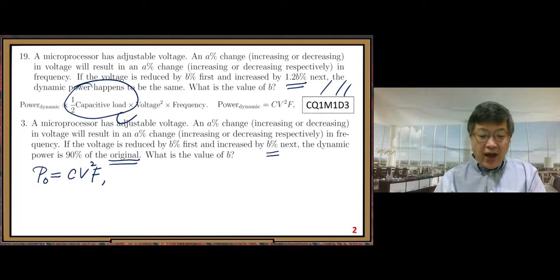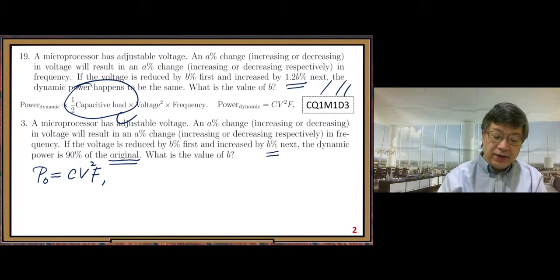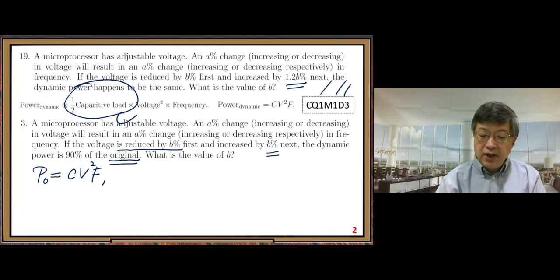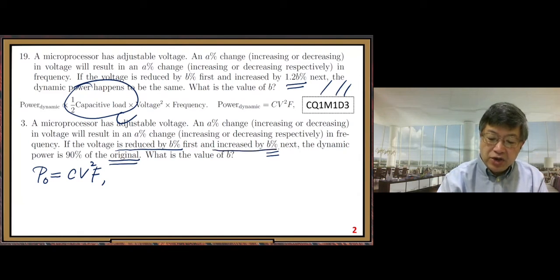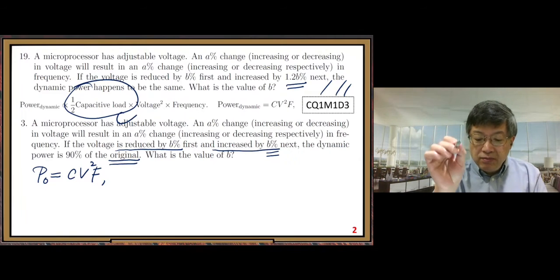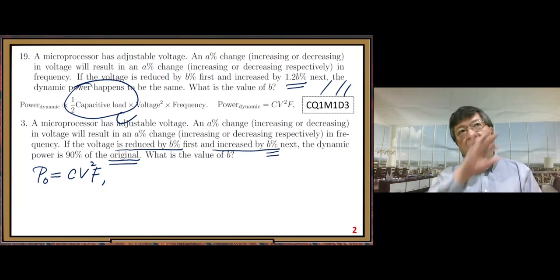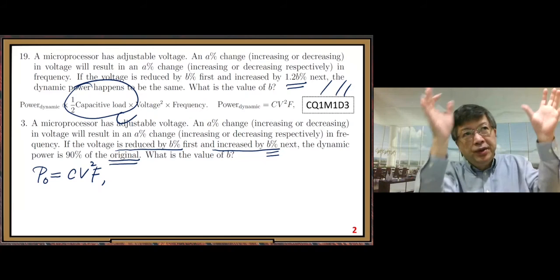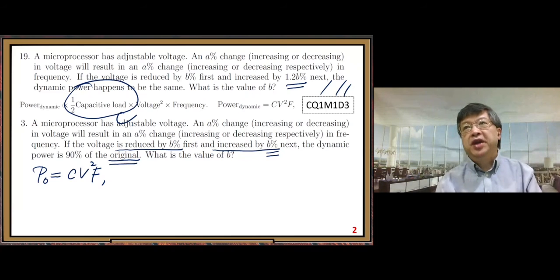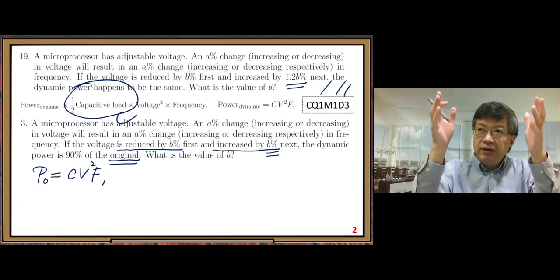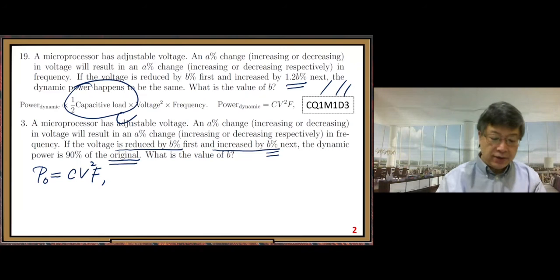Then look at the destination. The destination, we do voltage change twice. The first time, reduce by B percent. The second time, increase by B percent. But we need to combine these two changes to get the current voltage.